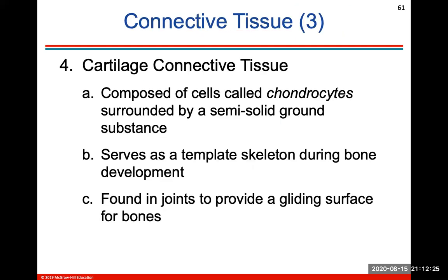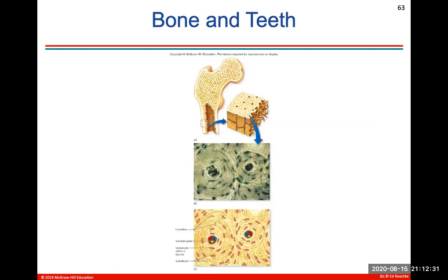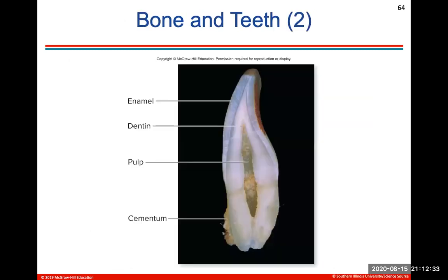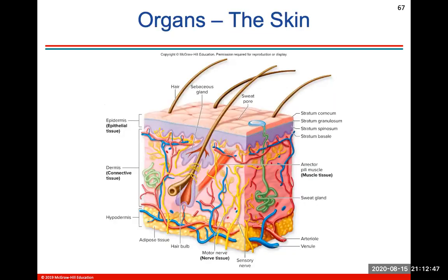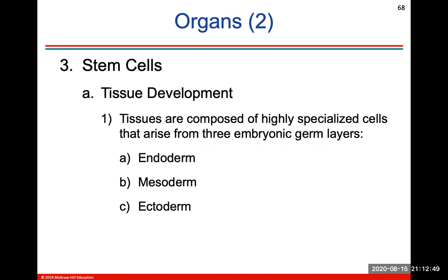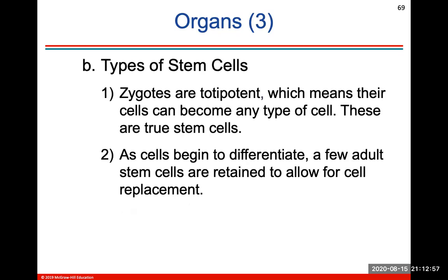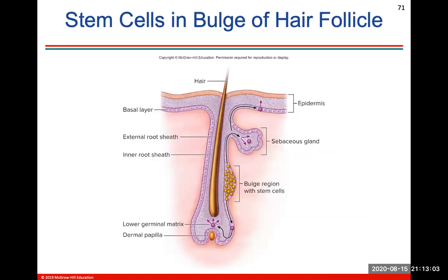Adipose tissue is simply fat. Cartilage cells are called chondrocytes. Bone and teeth are also part of connective tissue. Organs and systems: an organ is composed of two or more tissues, and the skin is the largest organ, made of those primary tissue layers. Stem cells arise from three embryonic germ layers — the endoderm, the mesoderm, and the ectoderm — and there are various types of stem cells, including stem cells found in the bulge of a hair follicle.